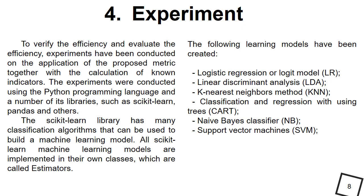The scikit-learn libraries have many classification algorithms that can be used to build a machine learning model. All scikit-learn machine learning models are implemented in their own classes which are called estimators. The following learning models have been created: logistic regression, linear discriminant analysis, k-nearest neighbors method, classification and regression with using trees, naive Bayes classifier,